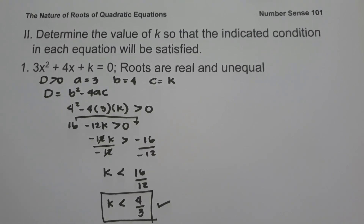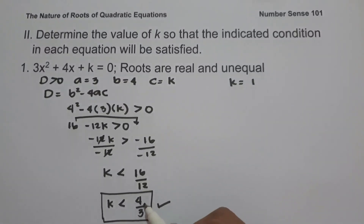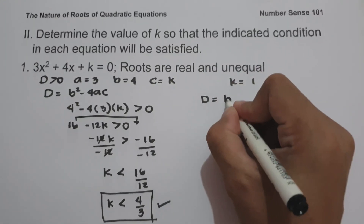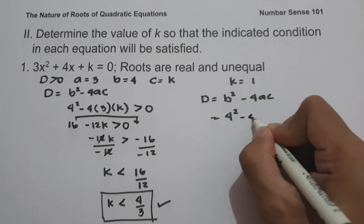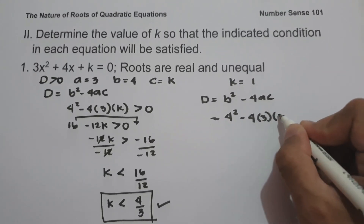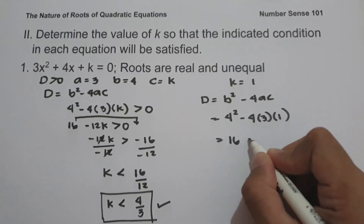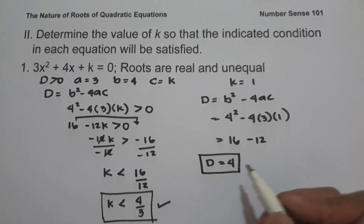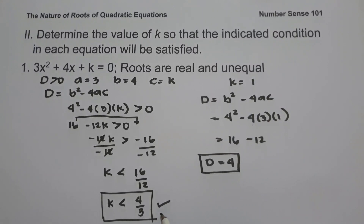So if you want to check if our answer is correct, let us have a number less than 4 over 3. Let's say k is 1, and 1 is less than 4 over 3. So let us have the discriminant: d equals b squared minus 4ac. So we have b, that is 4, squared minus 4 times a, that is 3, and c is 1. 4 squared is 16. Negative 4 times 3 is negative 12, times 1 is negative 12. And 16 minus 12 is 4. Since the discriminant is greater than 0, that means the roots are real and unequal. So therefore, our answer is correct.